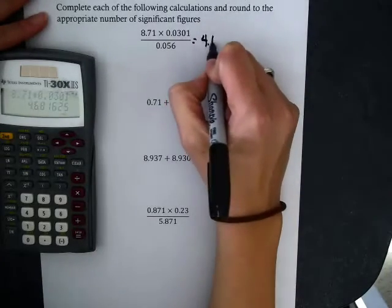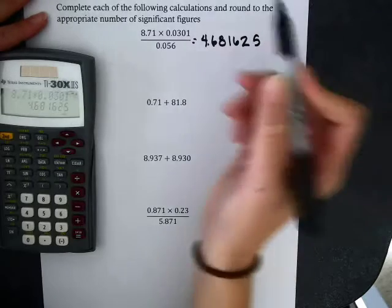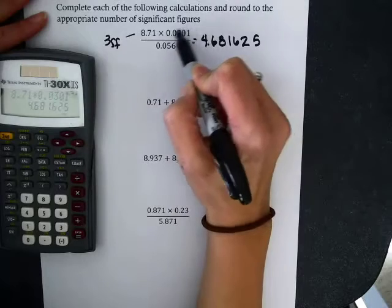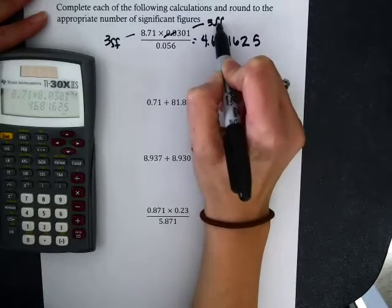And let me just write down what I got from my calculator. Now, looking at my numbers, these are multiplied and divided only. So I need to figure out how many significant figures each of my inputs had.